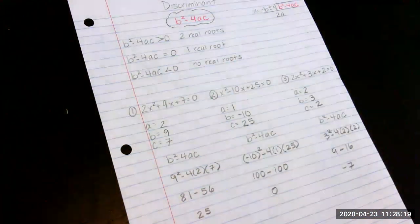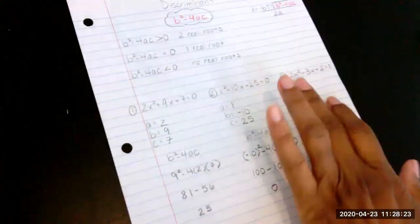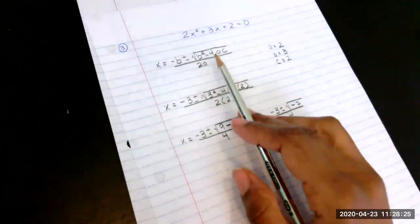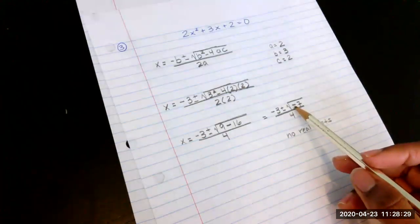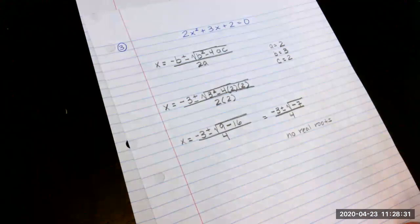And if you check back to the problem that we actually did, this same equation right here, we saw there were no real roots, because anytime you have a negative under a radical sign, the number is not a real number.